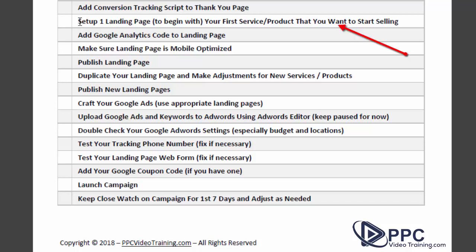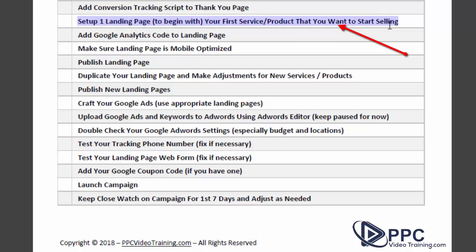Next, go to your website or landing page provider and set up just one landing page to begin with — the first service or product you want to start selling. If you have an ecommerce site, your sales page may already be set up. The reason we start with one: you can design and set up your first page fully, then duplicate it and change a few key factors for other products. People often try to set up ten landing pages at once — instead, get that first one up and running to start getting traffic and hopefully sales while you work on the rest.